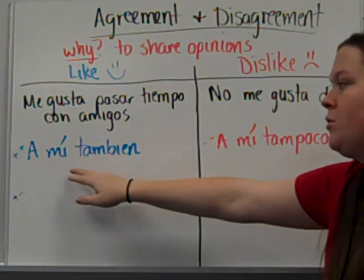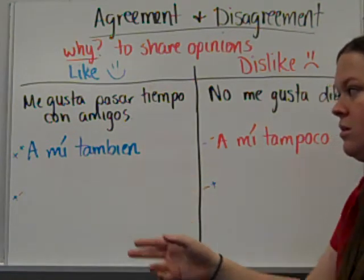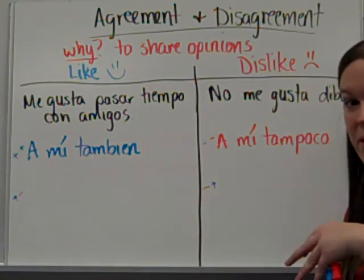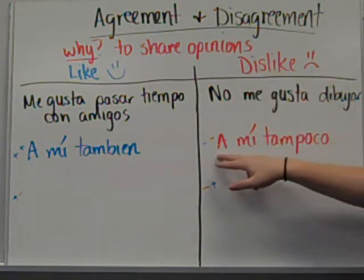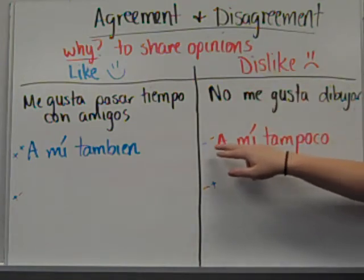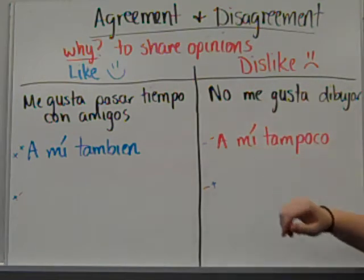Over here we have an agreement and you agree positively. Over here we have a disagreement and you're agreeing negatively.